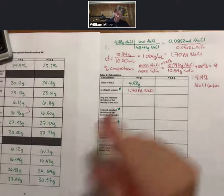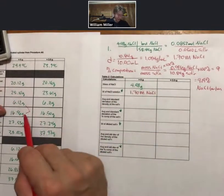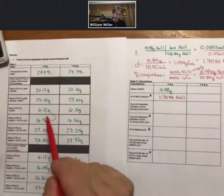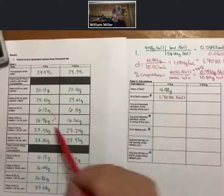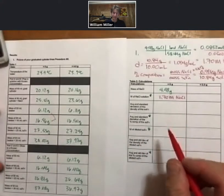Of course, for every single one of these, for each of my densities, or for each of my 10 milliliters. I can get both a density and a percent composition. All three of them you can average and take standard deviations of.